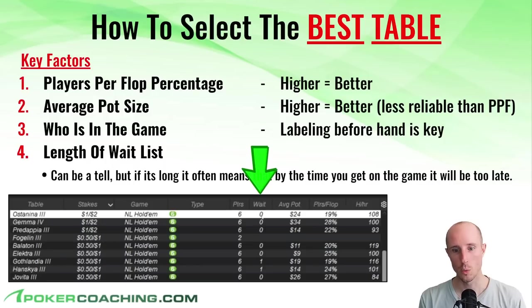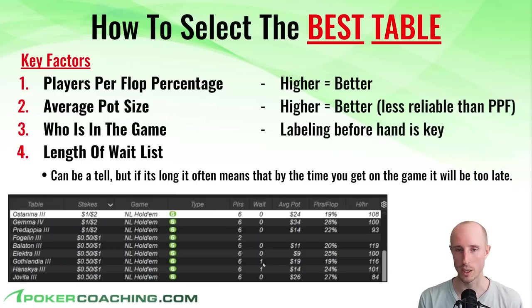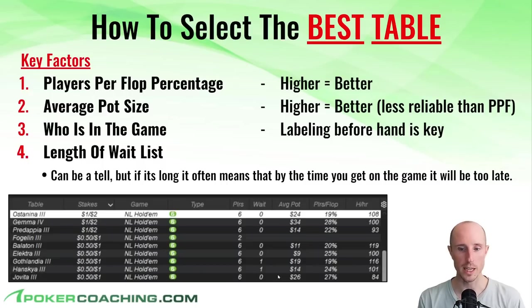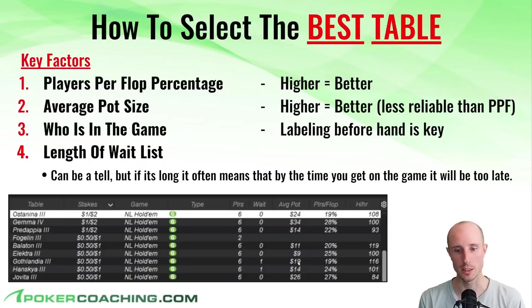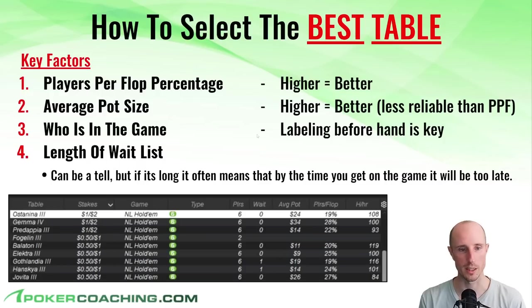Finally, we have the length of the waitlist, which can be a tell — especially if it's very long — because typically if there's a long waitlist for a game, there's a reason people are choosing to line up for that game over another. The downside is that by the time you get there, the player the game was built around will probably already be gone. It's always worth putting your name on the list, but often if the waitlist is five or six people, the game is going to be no good by the time you get there.